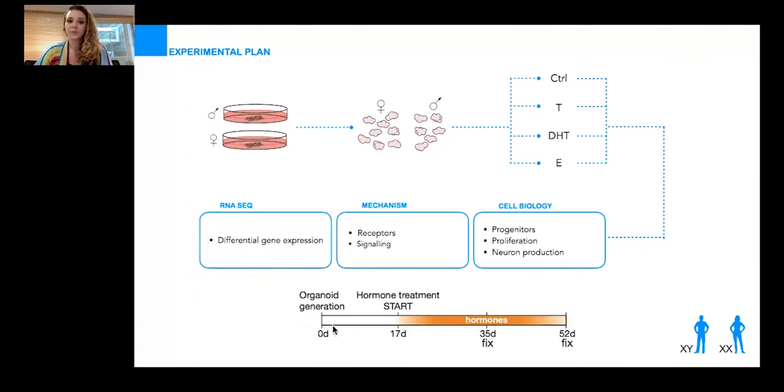This is the timeline of our experiments. We start adding hormones at 17 days after organoid generation, and this time point was chosen because at this stage the organoids roughly correspond to the stage when in the embryo the testosterone surge starts.